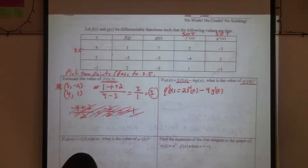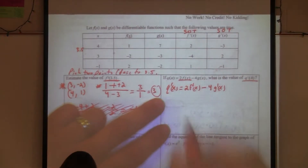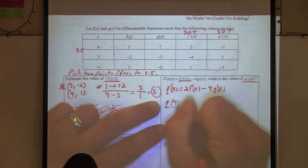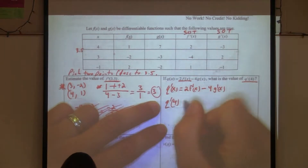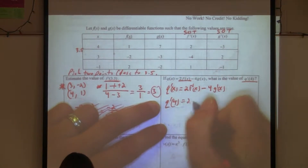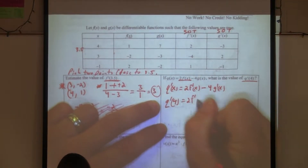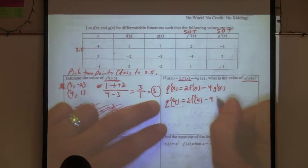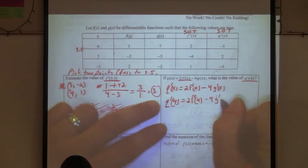Now we need to plug in the four, so we want q prime of four: two times f prime of four minus four times g prime of four.